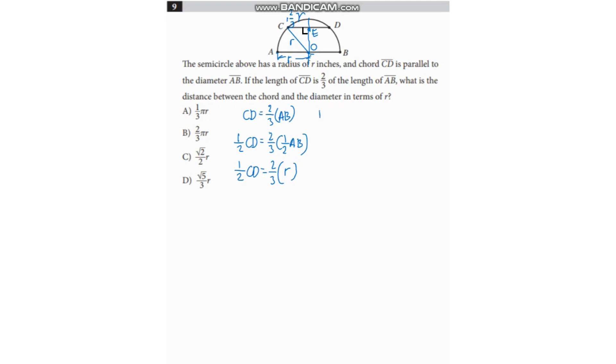We can solve EO using the Pythagorean theorem. So EO squared is equal to CO squared minus CE squared. EO squared is equal to the hypotenuse R squared. The hypotenuse is R squared minus the one-leg squared. So that is two-thirds times R squared.